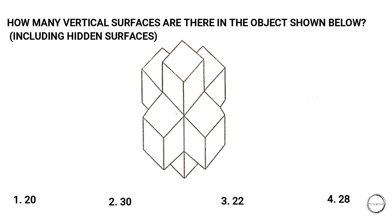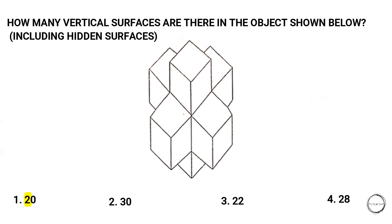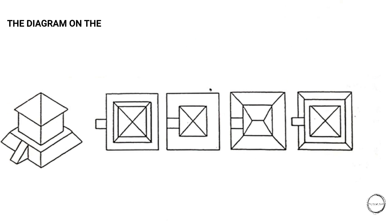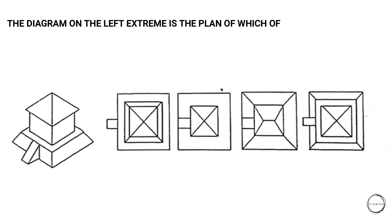Next question: how many vertical surfaces are there in the object shown below, including hidden surfaces? Options: 1) 20, 2) 30, 3) 22, 4) 28. You need to count every cube's vertical surfaces, and the answer is option one, that is 20.